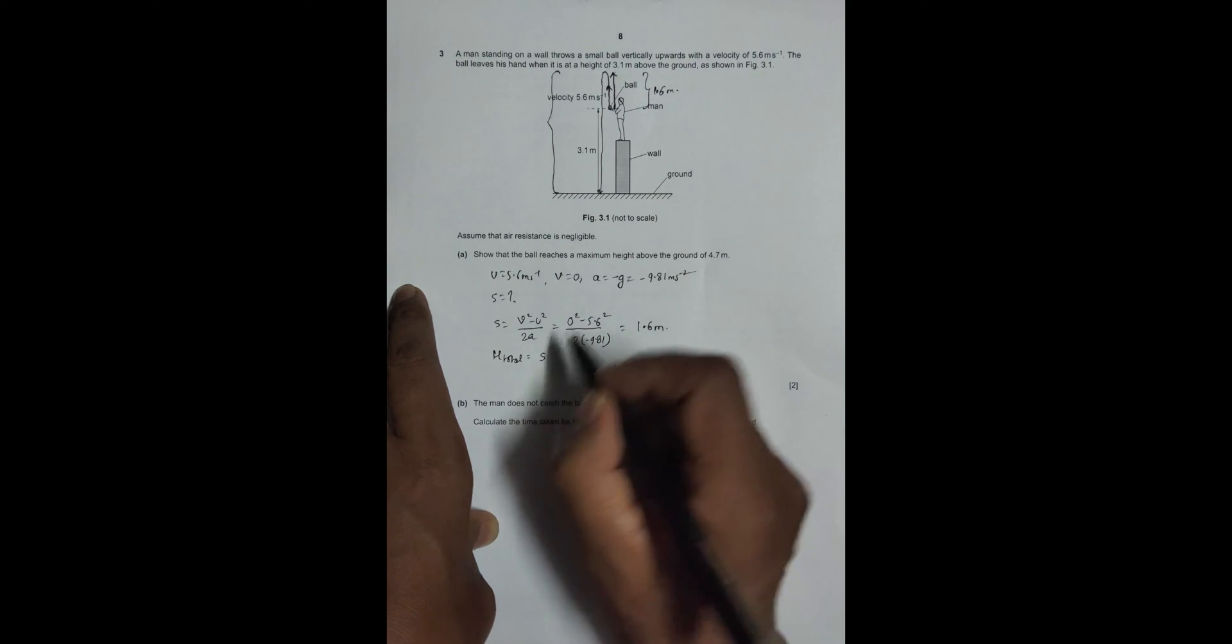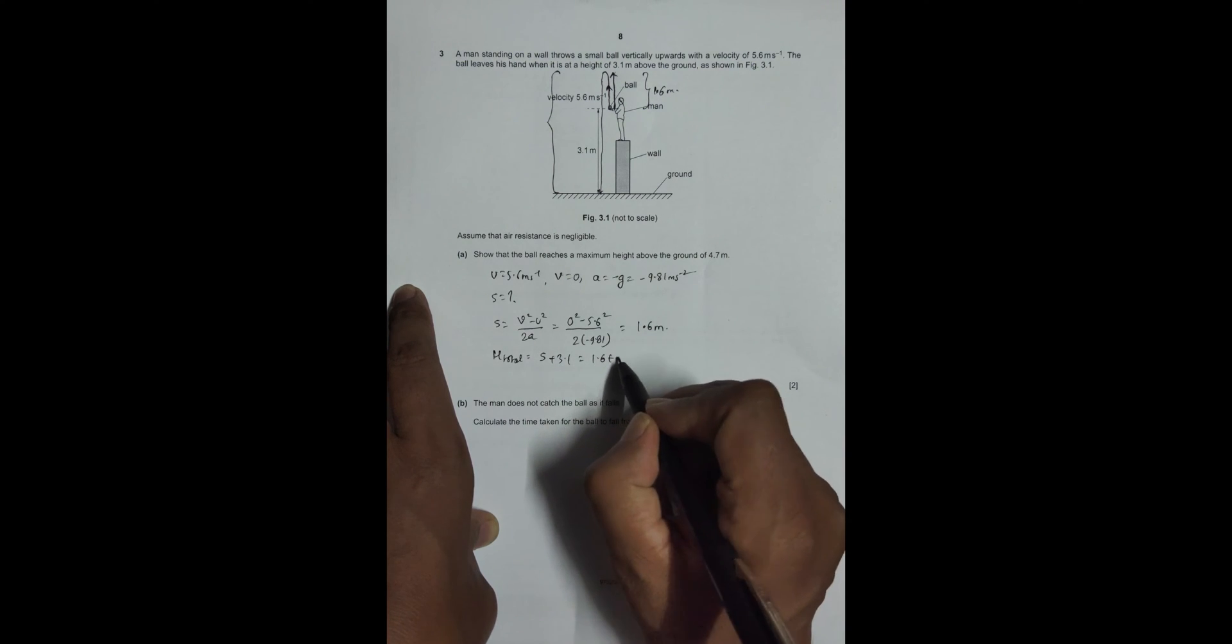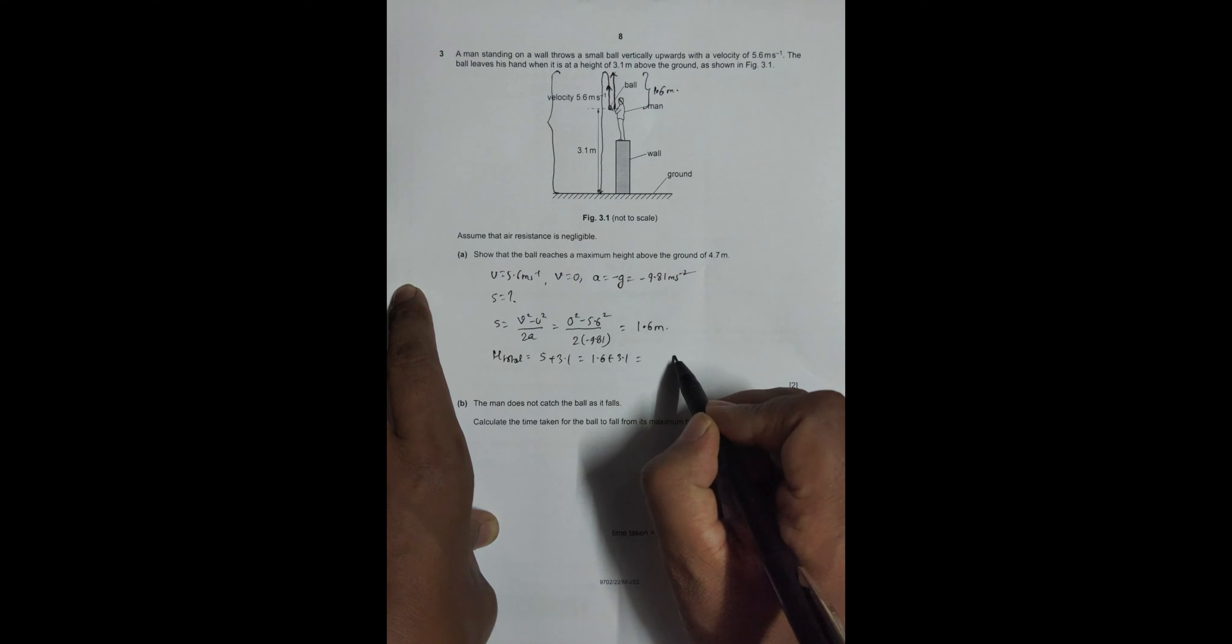Equal to 1.6 plus 3.1 equals 4.7 meters, as said by the question.